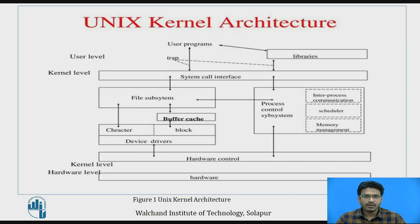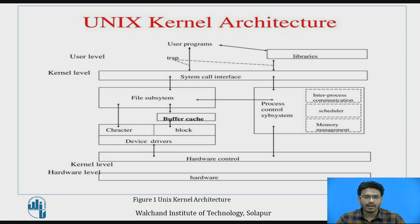Before understanding buffer cache and buffer header, we need to overview the architecture of the kernel. The kernel architecture has three different levels: the user level, kernel level, and hardware level. In the user level, users write and execute programs on the operating system. In the kernel level, it is divided into two parts: the file subsystem and process control subsystems. Users interact with these subsystems with the help of the system call interface.